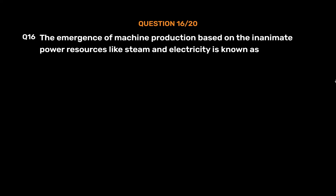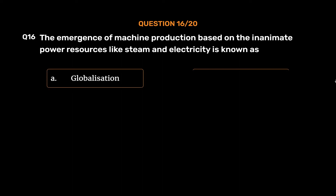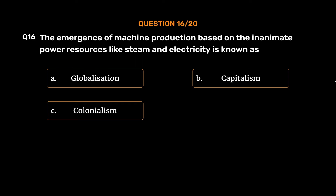Question 16: The emergence of machine production based on inanimate power resources like steam and electricity is known as: Options: A. Globalization, B. Capitalism, C. Colonialism, D. Industrialization. The correct answer is Option D: Industrialization.